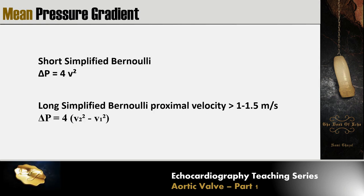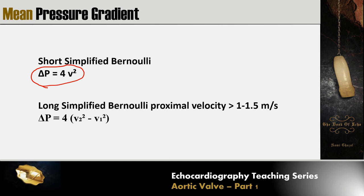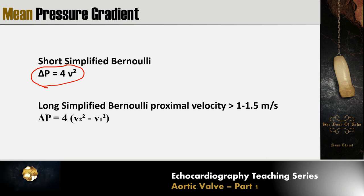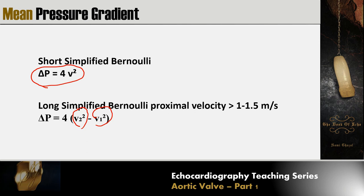After obtaining the highest velocity, calculate the mean pressure gradient using the Bernoulli equation — typically the simplified version. If there is proximal acceleration or a subaortic membrane creating two levels of stenosis, we must incorporate both the proximal velocity V1 and the distal velocity V2, particularly when the proximal velocity exceeds 1 to 1.5 meters per second.